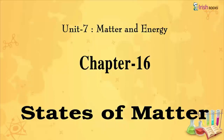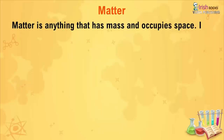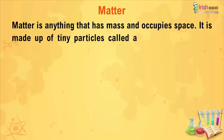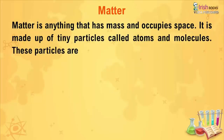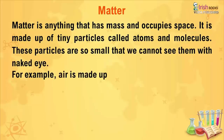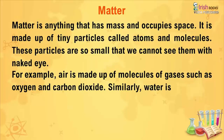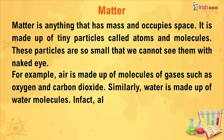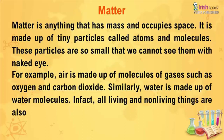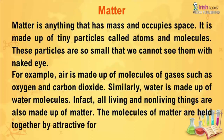Unit 7: Matter and Energy, Chapter 16: States of Matter. Matter is anything that has mass and occupies space. It is made up of tiny particles called atoms and molecules. These particles are so small that we cannot see them with the naked eye. For example, air is made up of molecules of gases such as oxygen and carbon dioxide. Similarly, water is made up of water molecules.